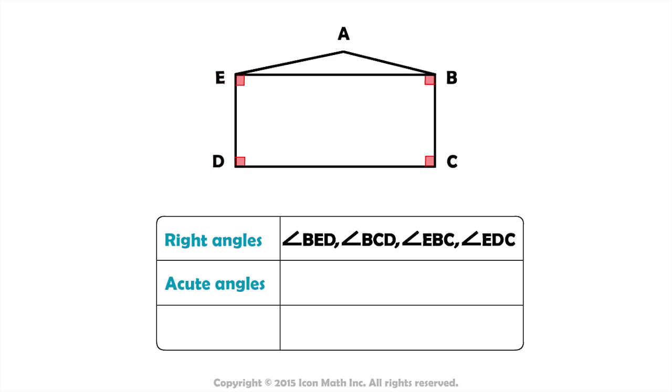What about acute angles? Can you see any angles that appear to be smaller than a right angle? There is the acute angle AEB and the angle ABE. Both of them are smaller than a right angle.